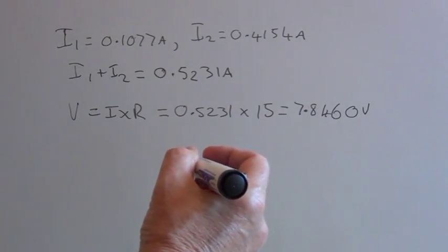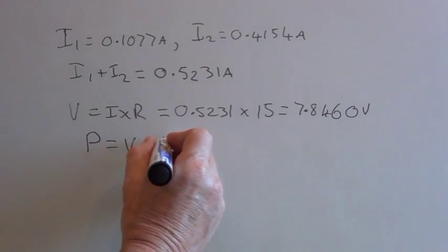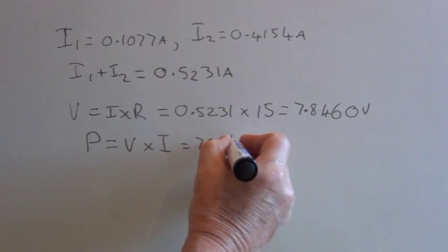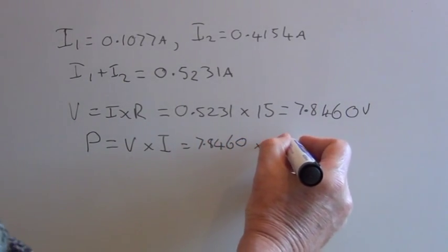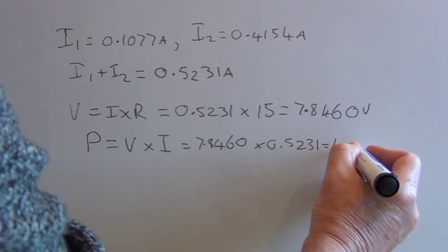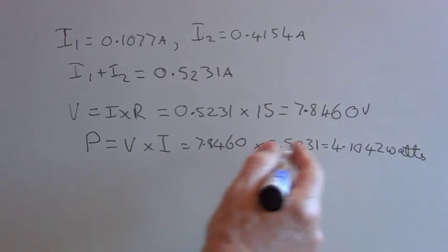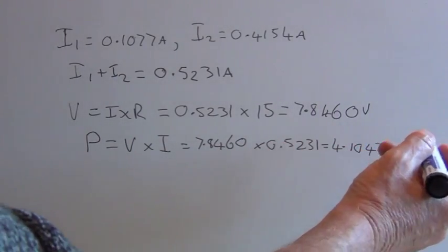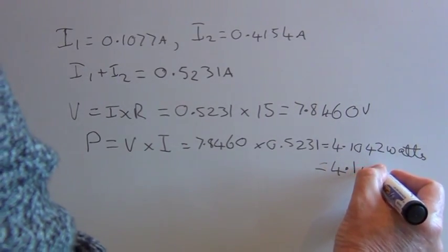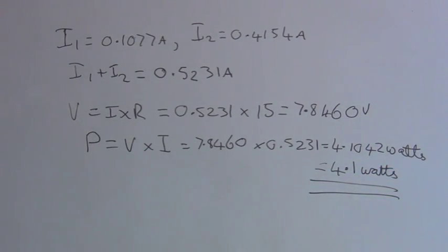So from that, we can now find the power dissipated across the 15 ohm resistor. P equals V times I, which equals 7.846 times 0.5231, which equals 4.1042 watts. So we've now answered the question and found the power dissipated by the 15 ohm resistor.